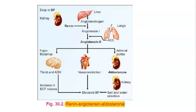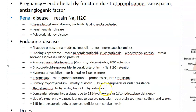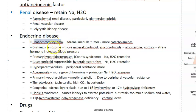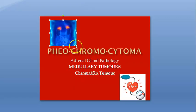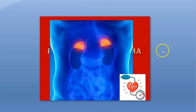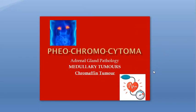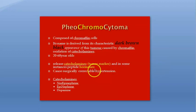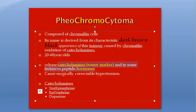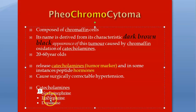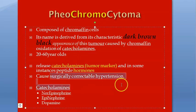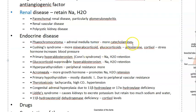Moving to endocrine diseases: pheochromocytoma is an adrenal medulla tumor. It releases more catecholamines — norepinephrine, epinephrine, dopamine. The job of epinephrine (adrenaline) is vasoconstriction, which causes hypertension. This is a surgically correctable hypertension.